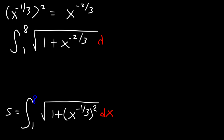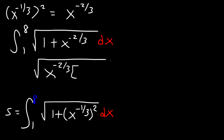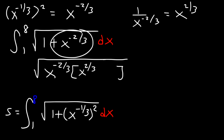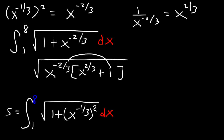So how can we integrate this function? At present, we can't use u substitution yet — we need to modify this expression. The best thing we can do is factor out x to the negative 2 thirds as the GCF. If we take out x to the negative 2 thirds, dividing 1 by x to the negative 2 thirds gives x to the positive 2 thirds, and dividing x to the negative 2 thirds by itself gives 1. If you distribute, negative 2 thirds plus 2 thirds is 0, so x to the 0 is 1. Anything raised to the 0 power is 1.